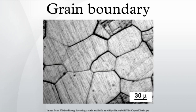On the other hand, grain boundaries disrupt the motion of dislocations through a material, so reducing crystallite size is a common way to improve strength, as described by the Hall-Petch relationship.